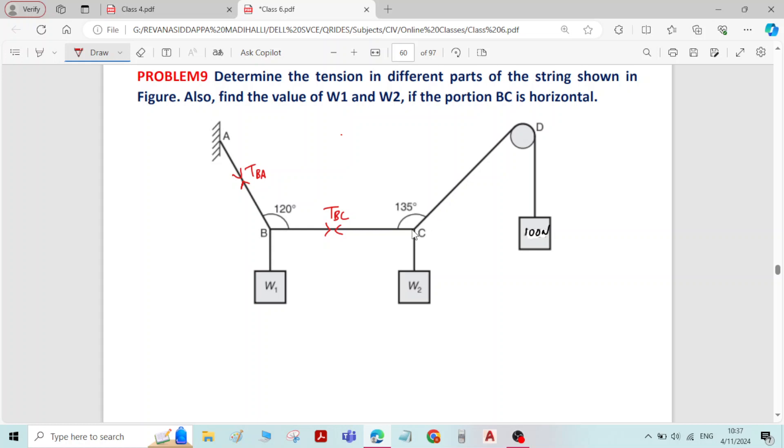If you select joint C, force in member BC is unknown, W2 is unknown. Only two unknowns are there and force in member CD is known, it is 100 Newton. Therefore, we will select joint C first.